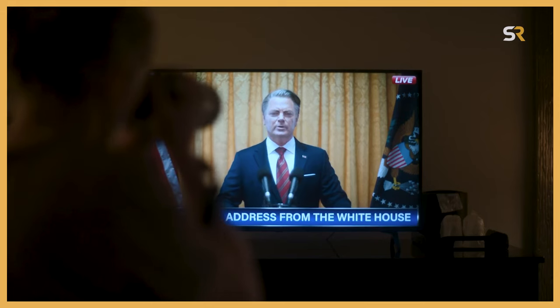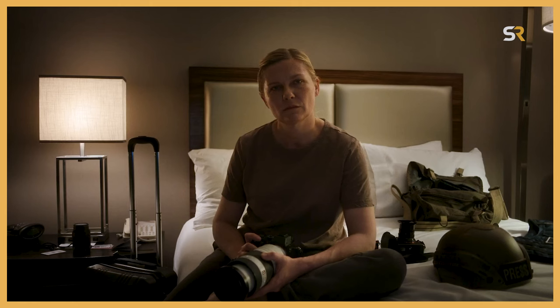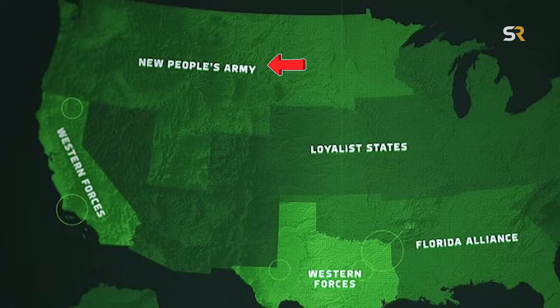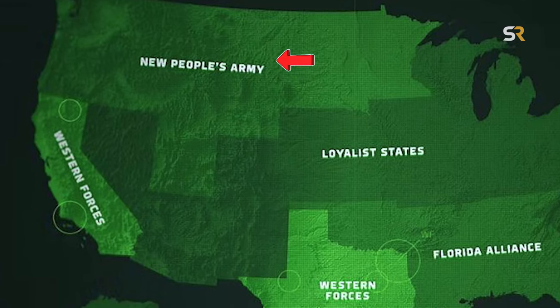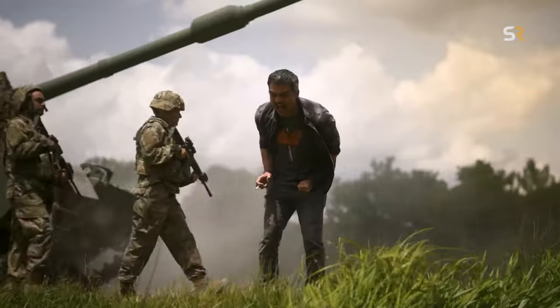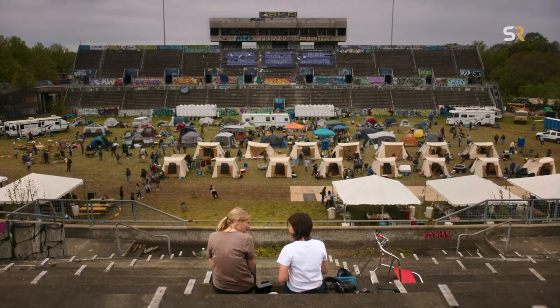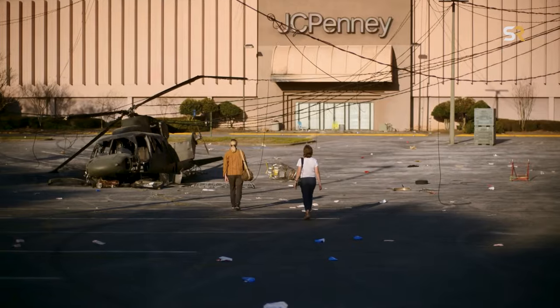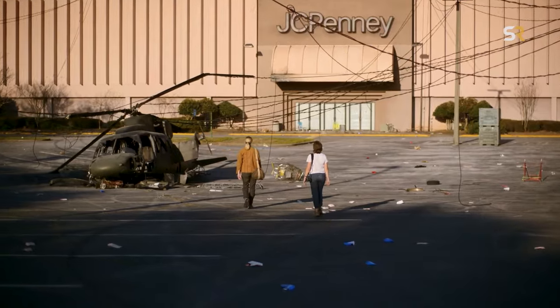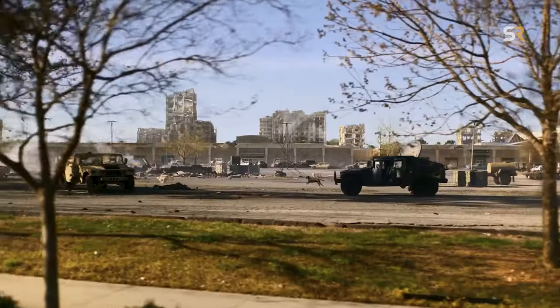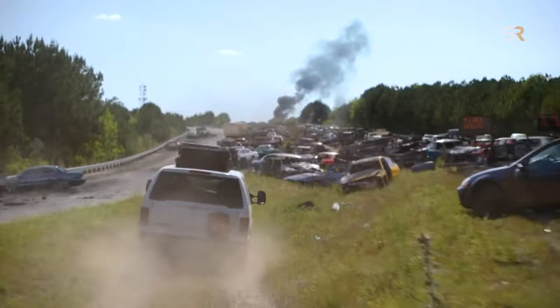Citizens of America. People of the Florida Alliance. This new map reveals the southeast corner of the U.S. has formed the Florida Alliance, while the northwest corner is the New People's Army. Every other state is labeled as loyalist states, indicating their allegiance to the tyrannical federal government. The many different factions in Civil War showcase just how divided the United States is in the war-torn future Garland has created.